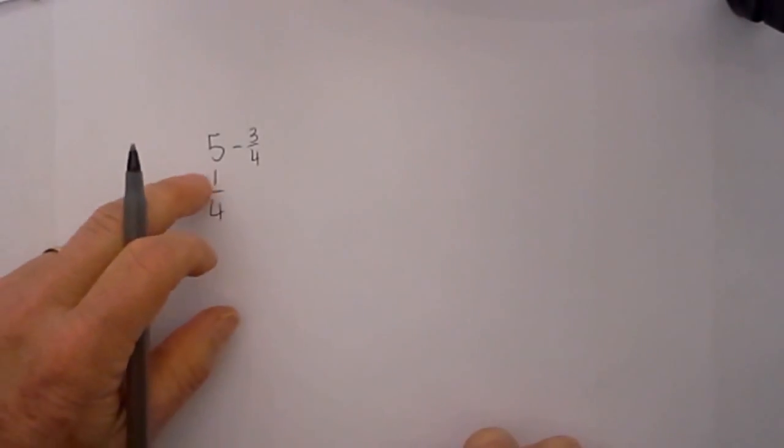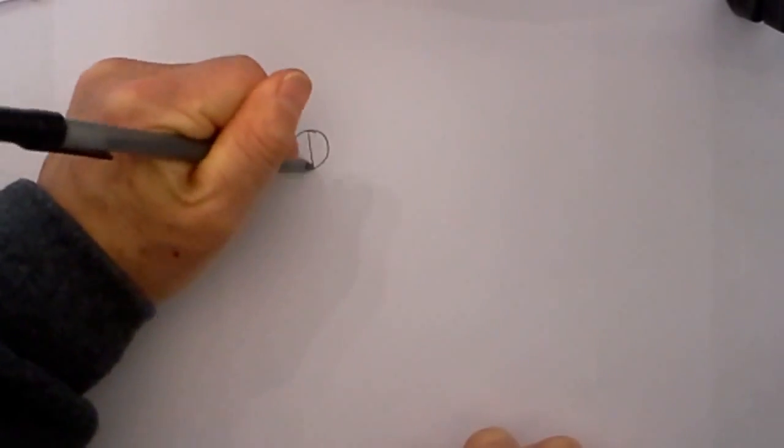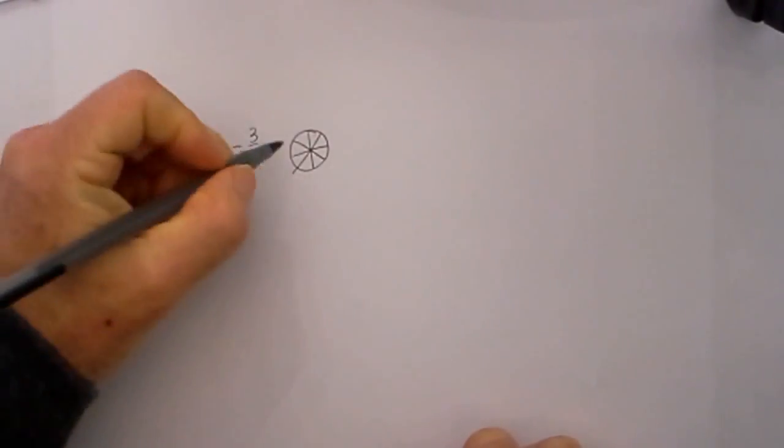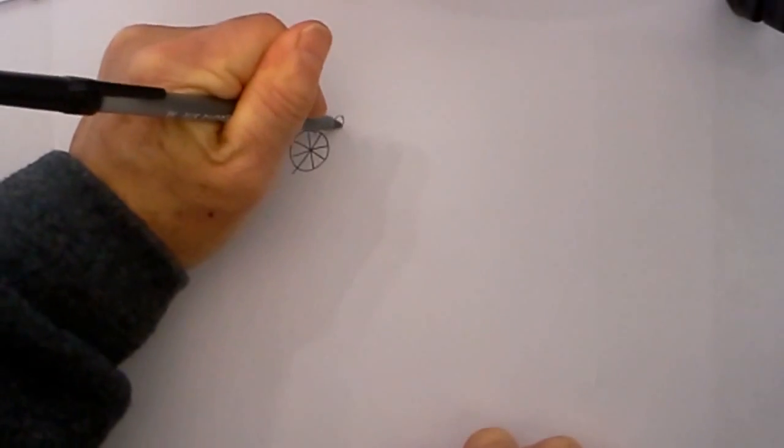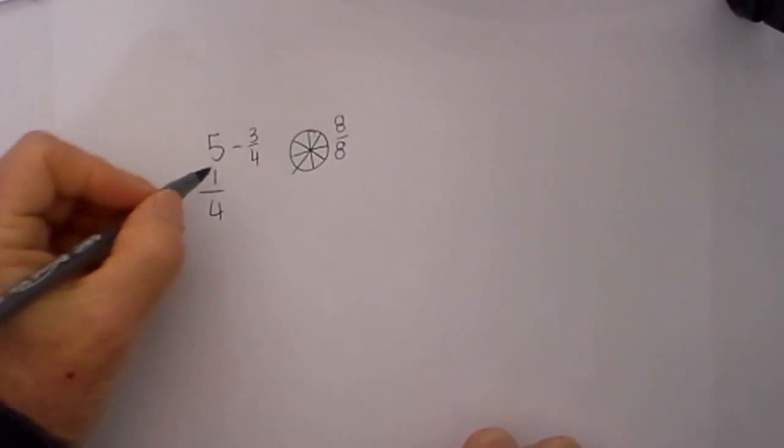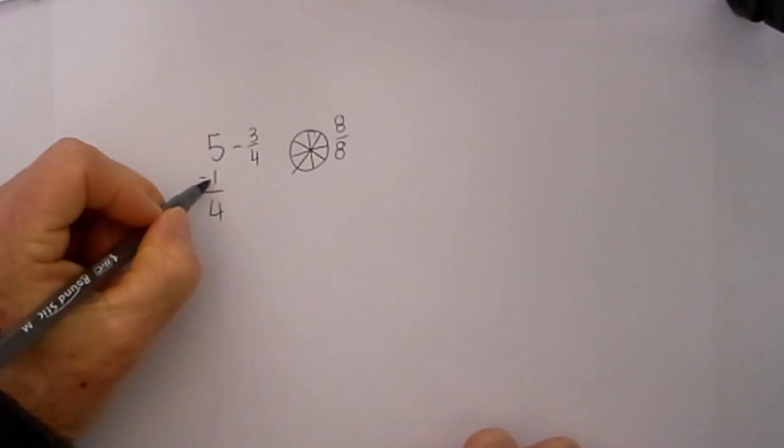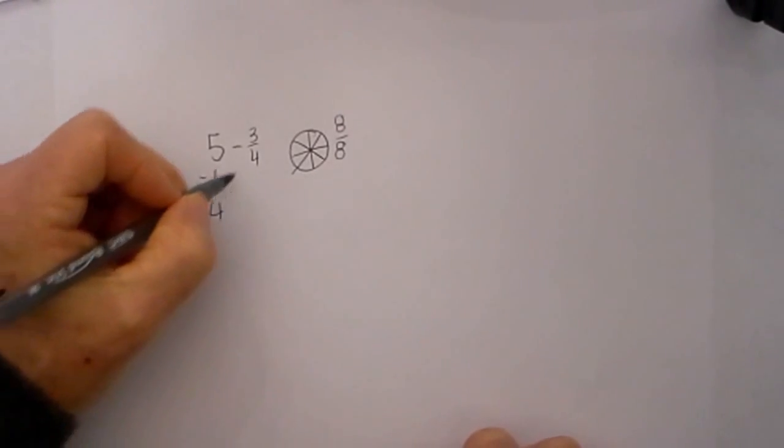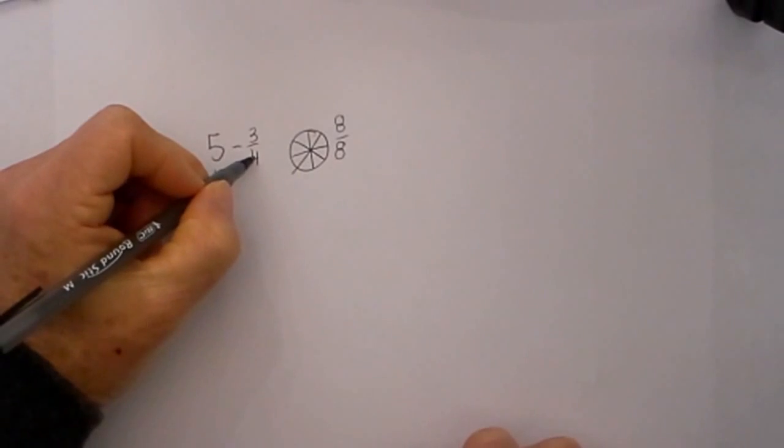Now we will rewrite the 1 as a fraction. Remember when we had the pizza divided into 8 slices and we rewrote it as 8 over 8? We will rewrite the 1 as a number over itself, and we will get the clue from the denominator of the fraction we are subtracting.